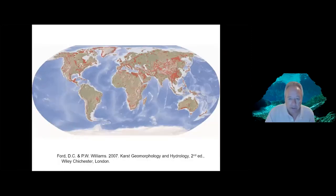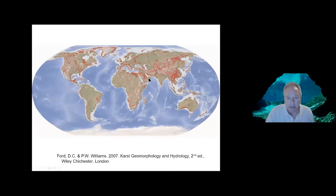This is a map of karst regions of the world shown in red or orangish color from a 2007 publication. Globally, karstic regions are generally at greatest concentration in the northern hemisphere, particularly in Asia and Europe and of course in North America.